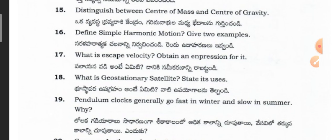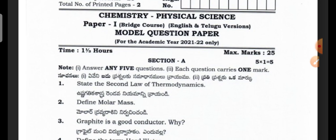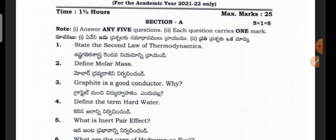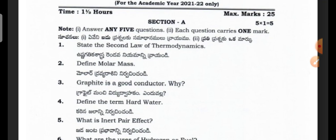So till now I have shown the model question paper for the bridge course first year students in physics. First year students, you should write in separate separate columns. Now this is the section A for chemistry: state the second law of thermodynamics.